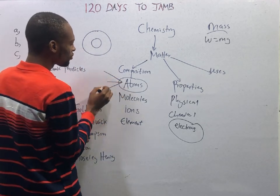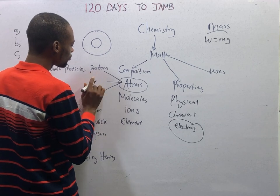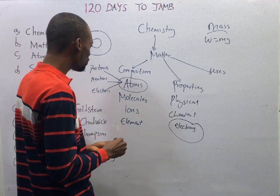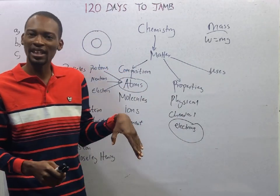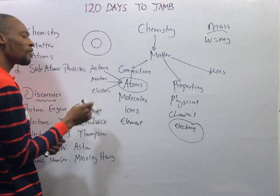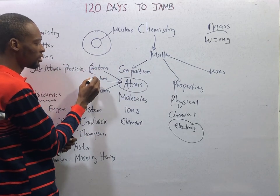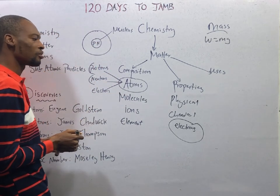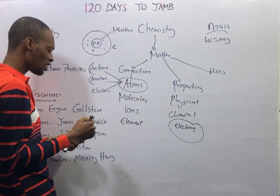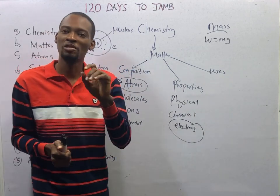Atoms have subatomic particles: protons, neutrons, and electrons. There is also a belief that protons have further sub-particles called quarks. Inside the atom is the nucleus, where the proton and neutron are located. Electrons move around the atom; they possess wave properties and move so fast they behave as waves. We shall get to that when we discuss wave mechanics models.